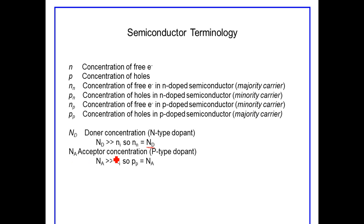N sub A is the acceptor concentration in a P-type dopant. It's the concentration of acceptor or P-type dopant that has been injected into or placed into the silicon substrate in the P-type area. Once again, typically speaking,